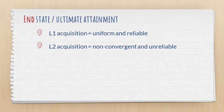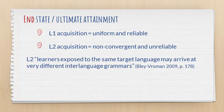In L1 acquisition, we tend to have uniform and reliable ultimate attainment. Babies learning their first language do not end up with very different linguistic systems in their heads. Whereas in the case of L2 acquisition, the result is non-convergent and unreliable, meaning that there's a lot of variability in terms of the end state. In other words, second language learners exposed to the same target language may arrive at very different interlanguage grammars.